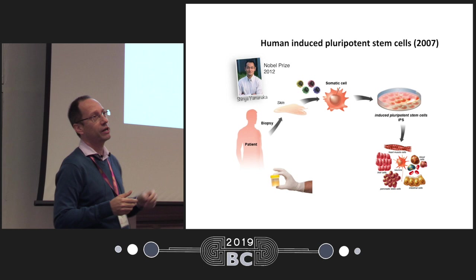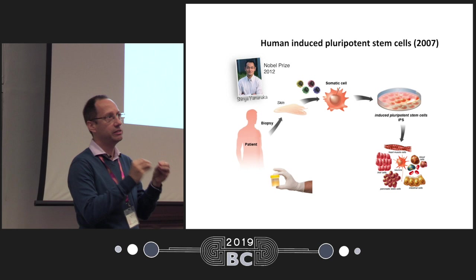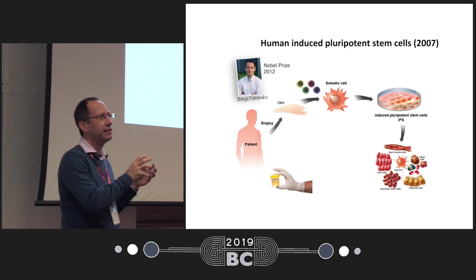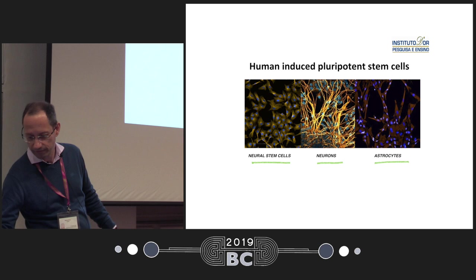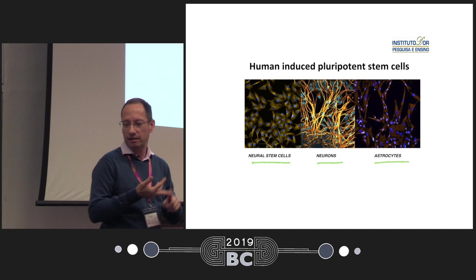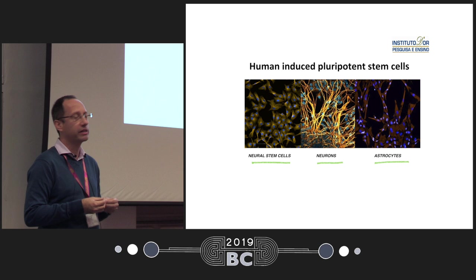It's a very elegant way to get these cells from a specific individual from their skin and then make them into neurons, for example. We improved a little on this technique — besides using skin, we can also get cells from urine, and make them into neurons. With that, we can create neural stem cells, astrocytes, neurons, and different cell types of the brain. This is how we work in the lab.